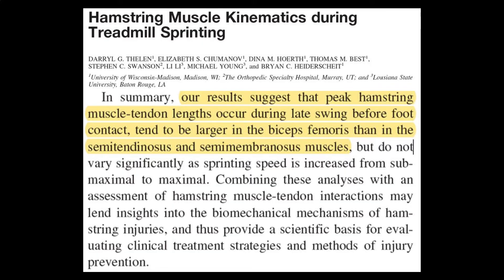In 2005, a study was published by Thielen and colleagues in the journal Medicine and Science in Sports and Exercise. The purpose of the study was to analyze hamstring muscle kinematics during sprinting and to better understand injury mechanisms and differences in injury rates between the hamstring muscles. Results indicated that the biceps femoris is the most likely of the three hamstring muscles to be injured. Other studies agree and show a relatively higher rate of injury to the biceps femoris as compared to the semimembranosus and semitendinosus.